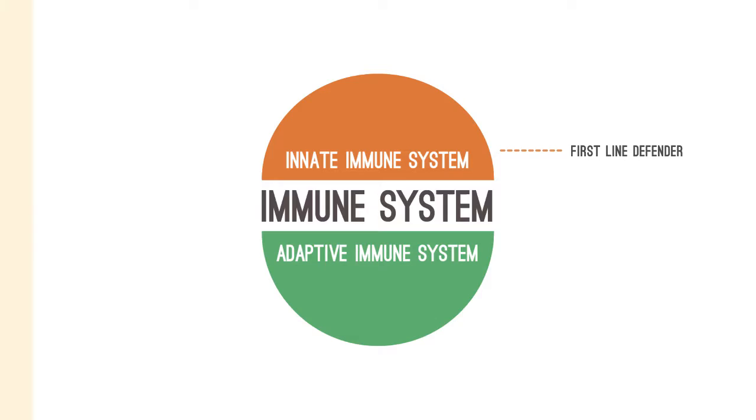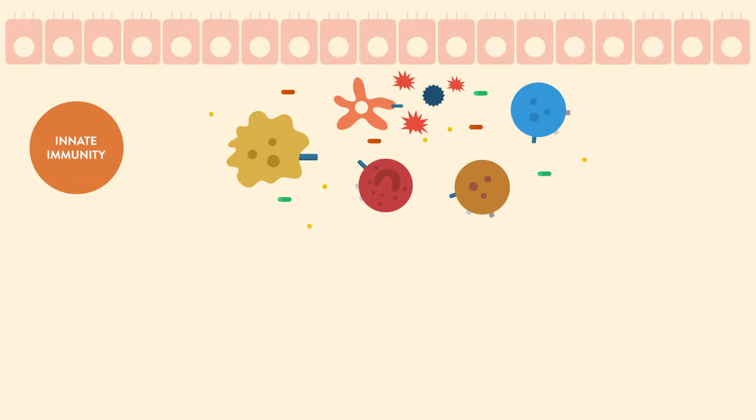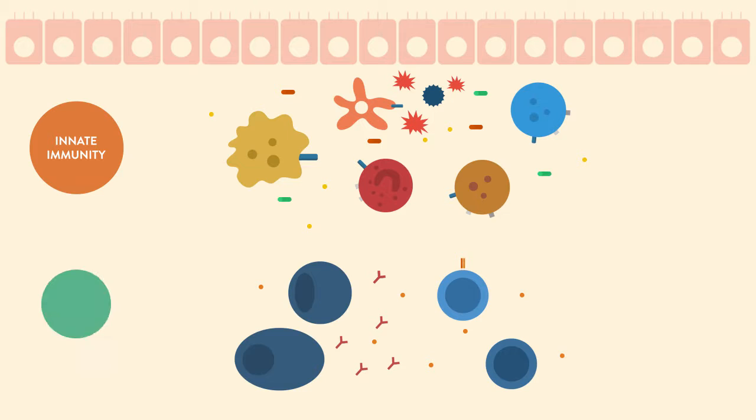Later on, once the innate immune system has tried to fight the infection, it will recruit other guys, the more fine-tuned defenders of the immune system. We call these the adaptive cells of the immune system, or adaptive immune system in short. The adaptive immune system is able to rearrange gene segments somatically to generate antigen-binding molecules. This allows us for a much more customized and robust response.